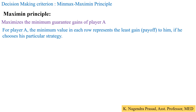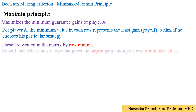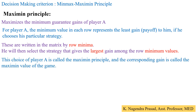For player A, the minimum value in each row represents the least gain to him if he chooses that particular strategy. So the minimum value of each row represents the guaranteed gain for the respective strategy. These are written in the matrix as row minima. Player A will then select the strategy that gives the largest gain among the row minimum values. This choice is called the maximin principle, and the corresponding gain is called the maximin value of the game.